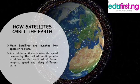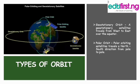How do satellites orbit the Earth? Most satellites are launched into space on rockets. A satellite orbits when its speed is balanced by the pull of Earth's gravity. Satellites orbit at different heights, speeds, and along different paths. This is based on gravitational force — an object continues in a state of rest or uniform motion until acted upon by an external force. This is the law that helps satellites orbit the Earth.